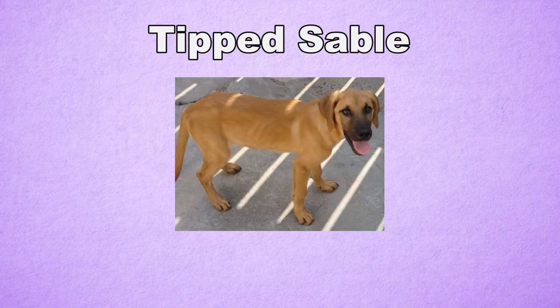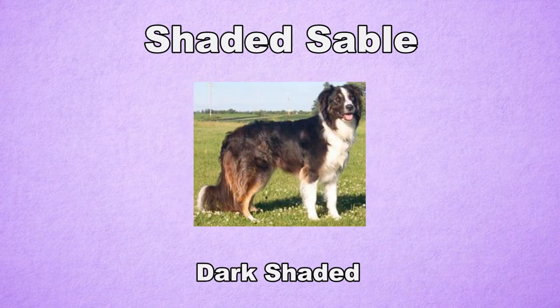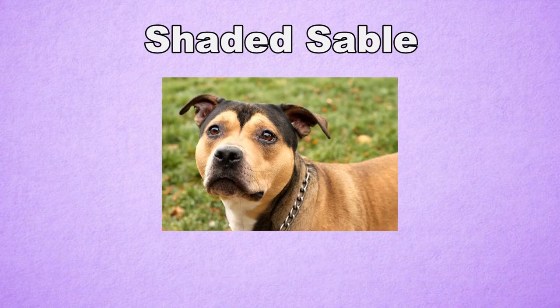It seems that most tipped sables also have masks, which are a part of the E-locus. Shaded sables are red dogs with brown and black hairs covering the top of their heads, ears, and backs. The shading can be very light or very dark. A distinctive feature is the widow's peak on the forehead, where the brown or black creates a point. Shaded sable occurs mostly in long hair breeds.